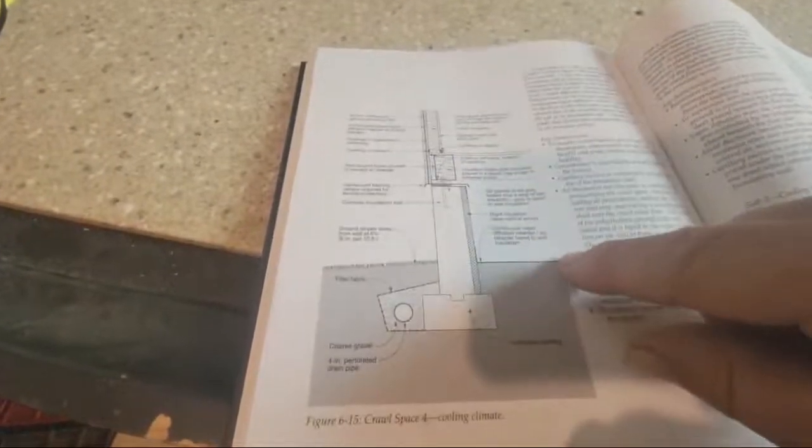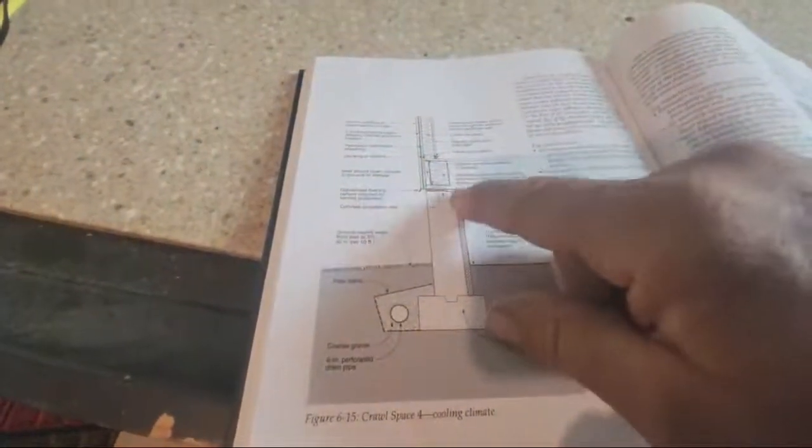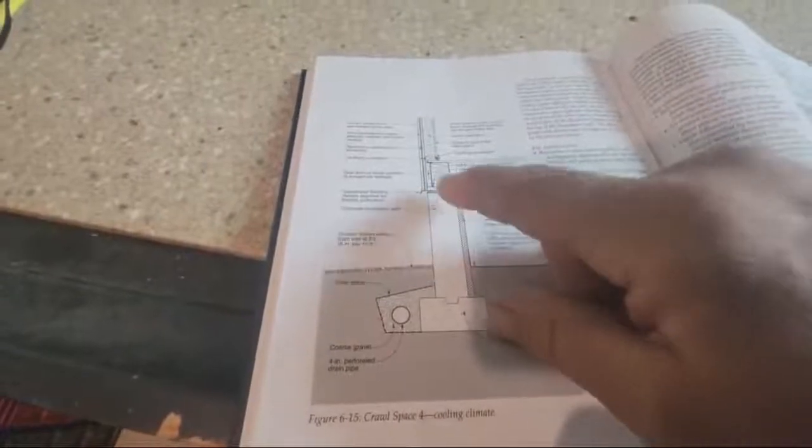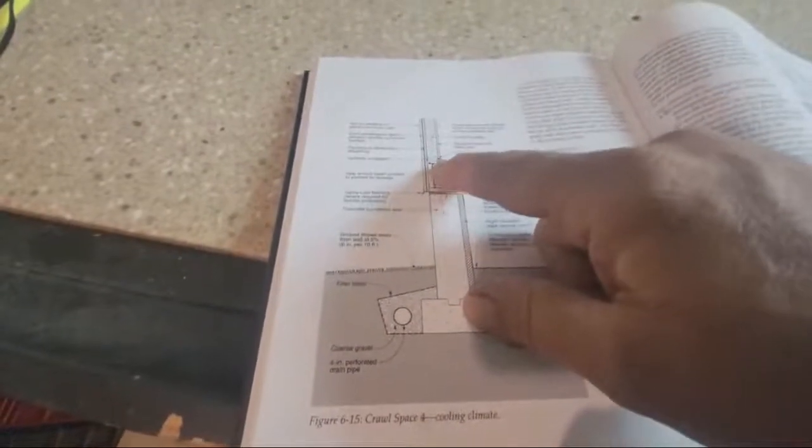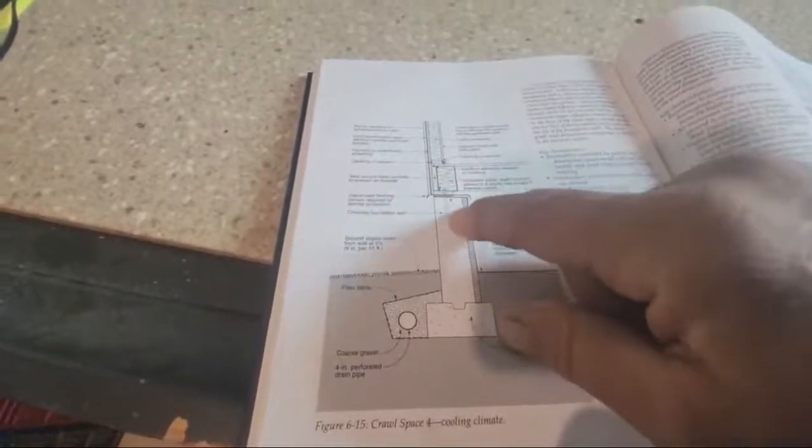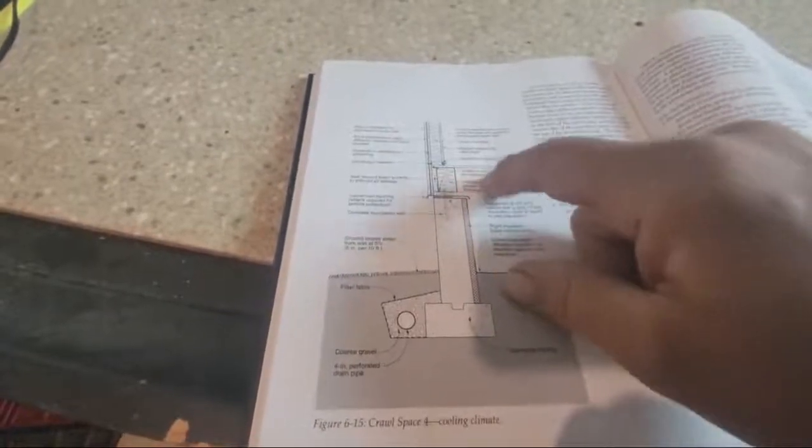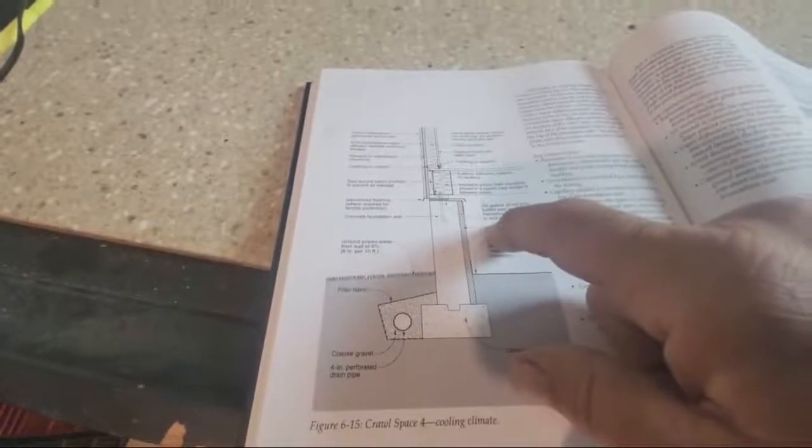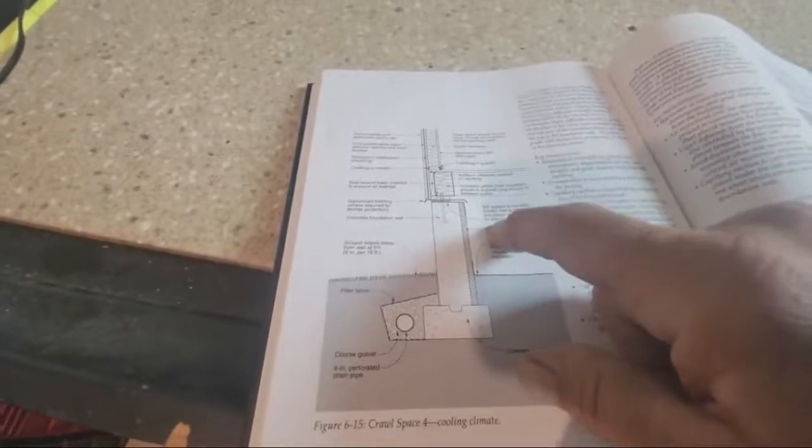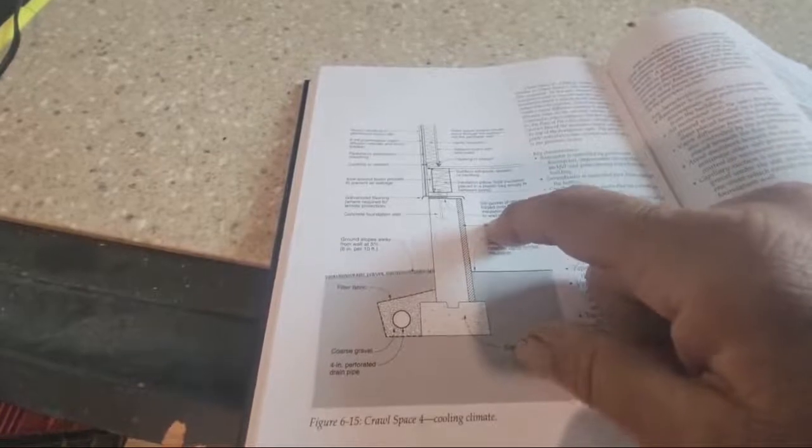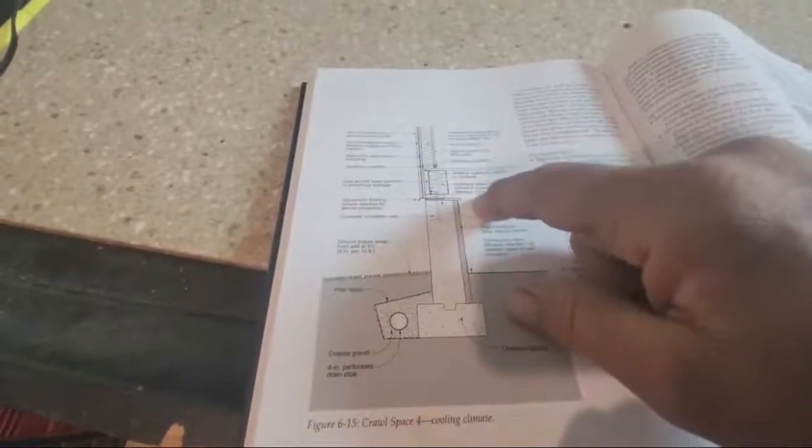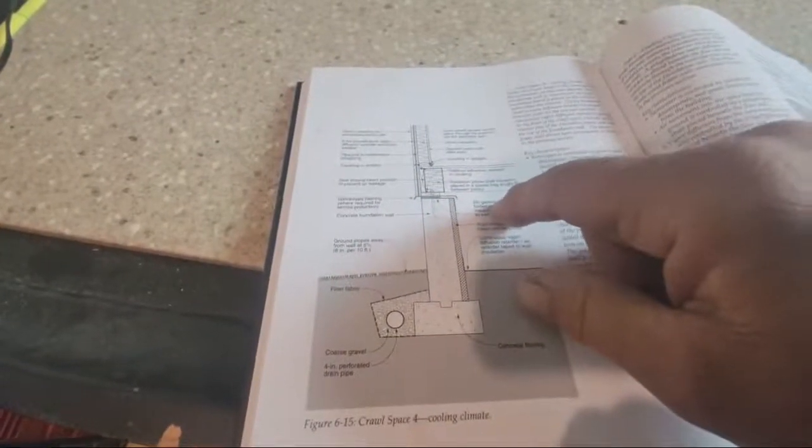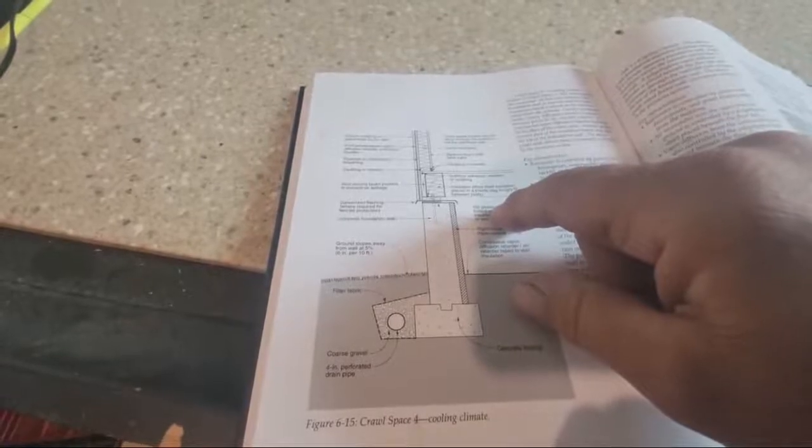The key issues are 100% sealed vapor barrier, perimeter insulation, insulation in the band joist pockets sealed, no insulation between the floors, conditioning with heating, cooling, and dehumidifying, especially dehumidifying when necessary in the crawl space. Then if you need to put a passive vent in or a register or do an HVAC balance, you could do all that as well.